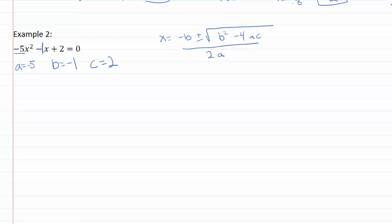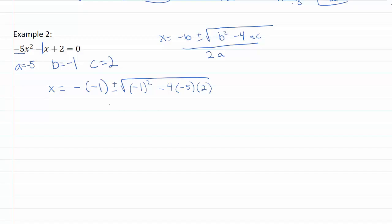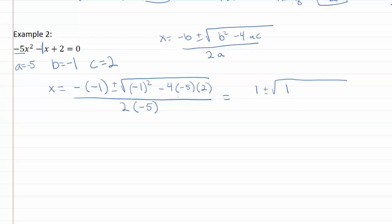Now we can plug in our numbers. We start with negative b, so that's negative of negative one, plus or minus the square root of b squared — negative one squared — minus four times negative five times c, which is two, all over two times a, and a is negative five. Simplifying: the double negative becomes positive one, plus or minus the square root of negative one times negative one equals one, and negative four times five times two gives positive forty — since negative times negative is positive — all over two times negative five, which is negative ten.